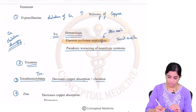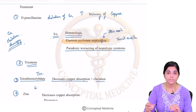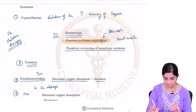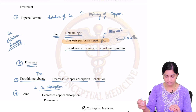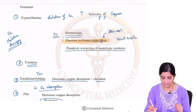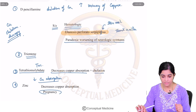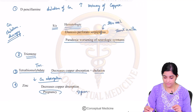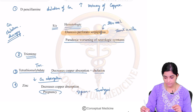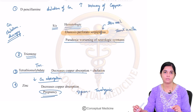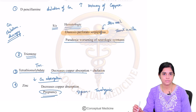The fourth drug commonly used is zinc. The mechanism of action of zinc is that it decreases copper absorption. The advantage of zinc is that it can be used in pregnancy. The problem with D-penicillamine is that it has teratogenic side effects, so in pregnancy, zinc is the preferred drug.